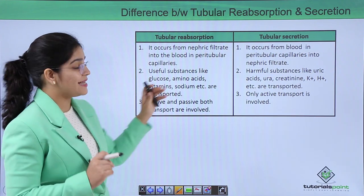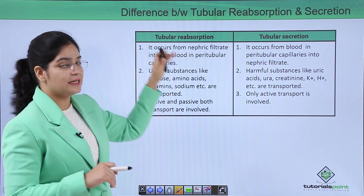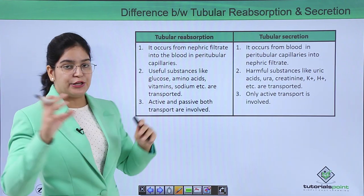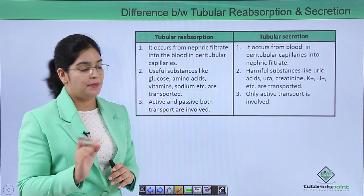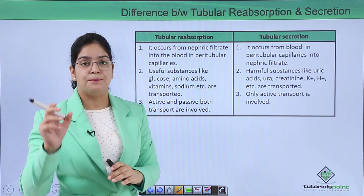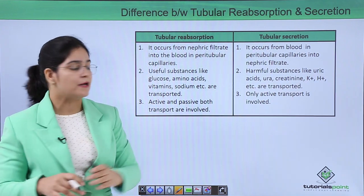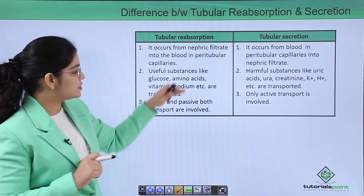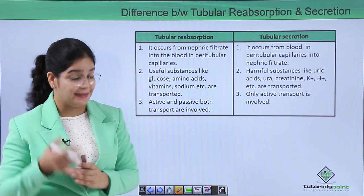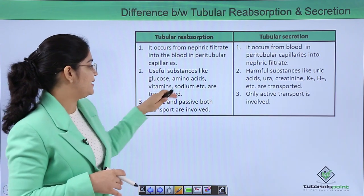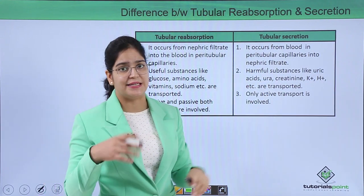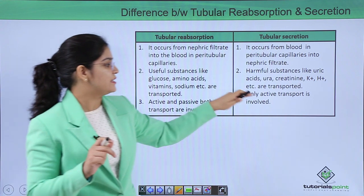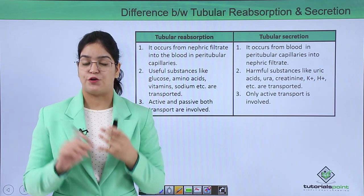Now let's learn the difference between the reabsorption process and the secretion process in the tubules. Reabsorption occurs from the nephric filtrate into the blood in the peritubular capillaries. Secretion, on the other hand, involves transfer of different solutes — mainly waste products — from blood to the tubular structure so they can pass out through urine. Useful substances like glucose, amino acids, vitamins, and sodium are reabsorbed, while urea, uric acid, creatinine, potassium, hydrogen ion, and ammonia are secreted. Reabsorption is both active and passive, whereas secretion is only an active process.